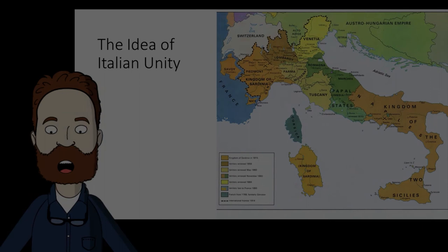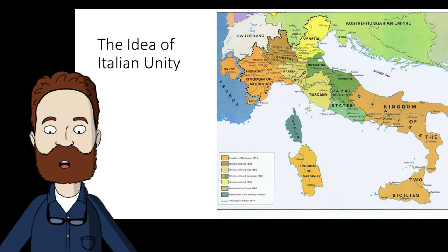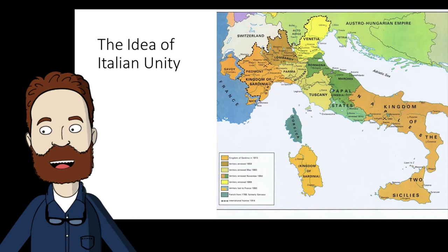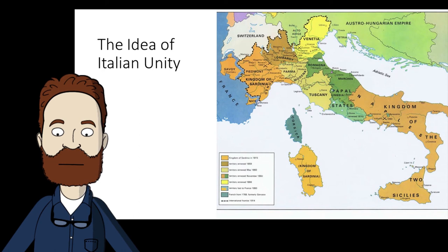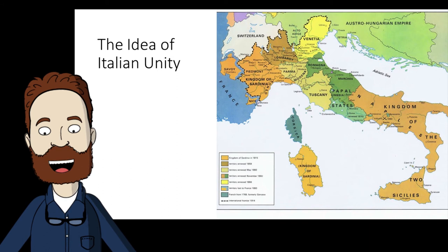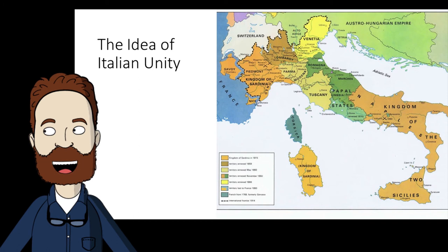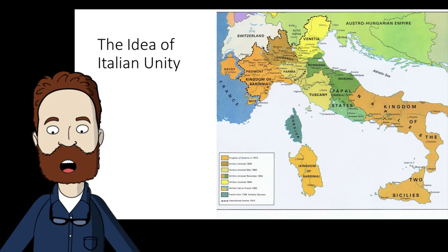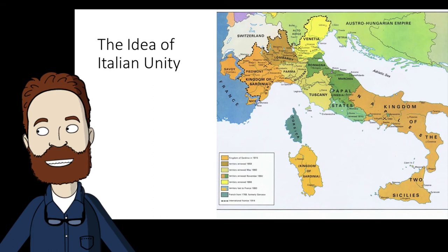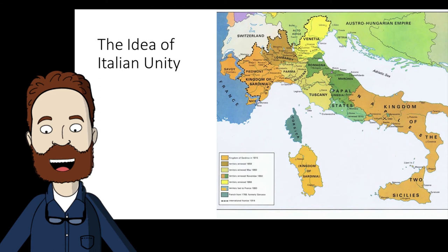The idea for Italian unity was a product of the Napoleonic Wars. During those wars, Napoleon had created the puppet Kingdom of Italy, and this had stimulated a movement for Italian unification on the part of intellectuals and the middle class. Just as with Germany, the question was which Italian state would be responsible for the unification efforts. In the 19th century, there were really three major independent states in Italy: the Kingdom of the Two Sicilies in the southern peninsula, the Kingdom of Sardinia — comprising the island of Sardinia and the mainland area of Piedmont — and the Papal States in the middle.